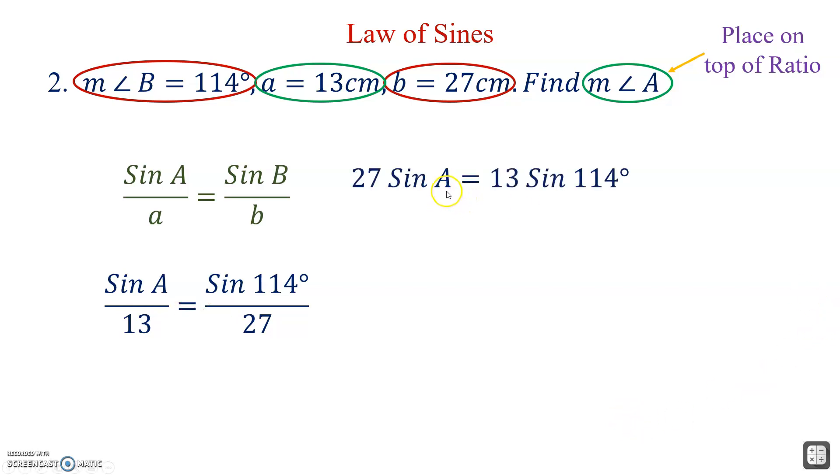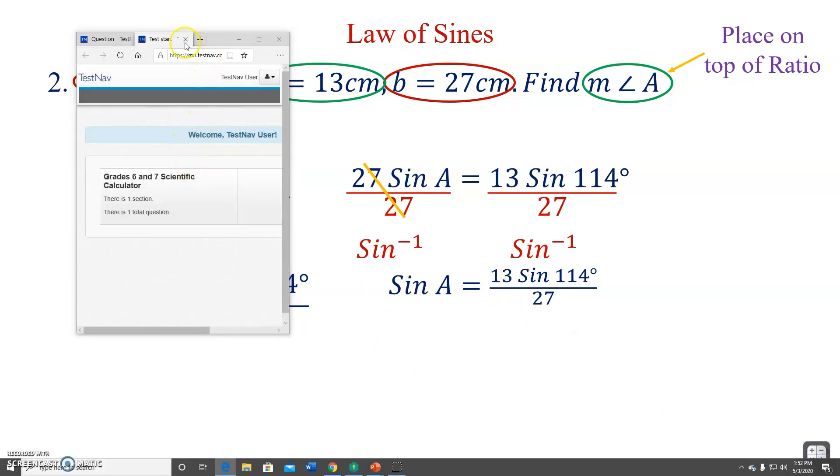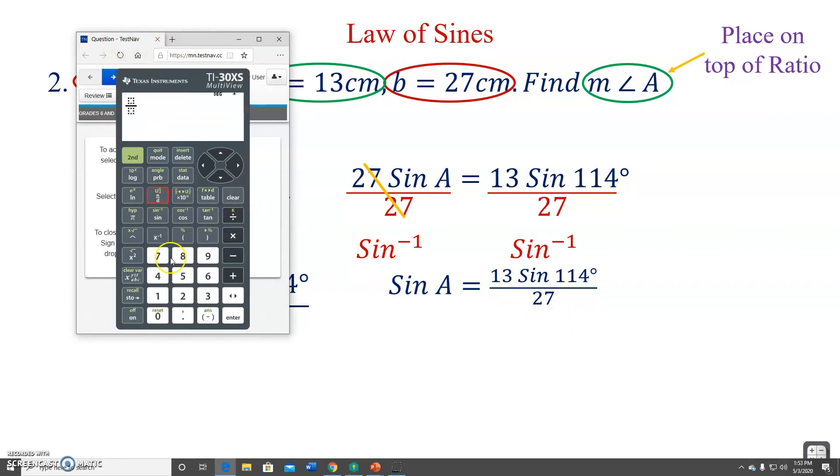Now, we'll just solve for A. To solve for A, we'll first divide by 27. That yields sine A equals 13 sine 114 over 27. Now, it's time to get A by itself. We'd have the inverse sine on both sides. In the calculator, I'm first going to find what's in blue here. Oops, didn't need to do that. Let's clear. We've got 13 sine 114 over 27. Now that I have that answer, then I'll go ahead and inverse sine. Second sine, second answer. I'm not going to type all that in.